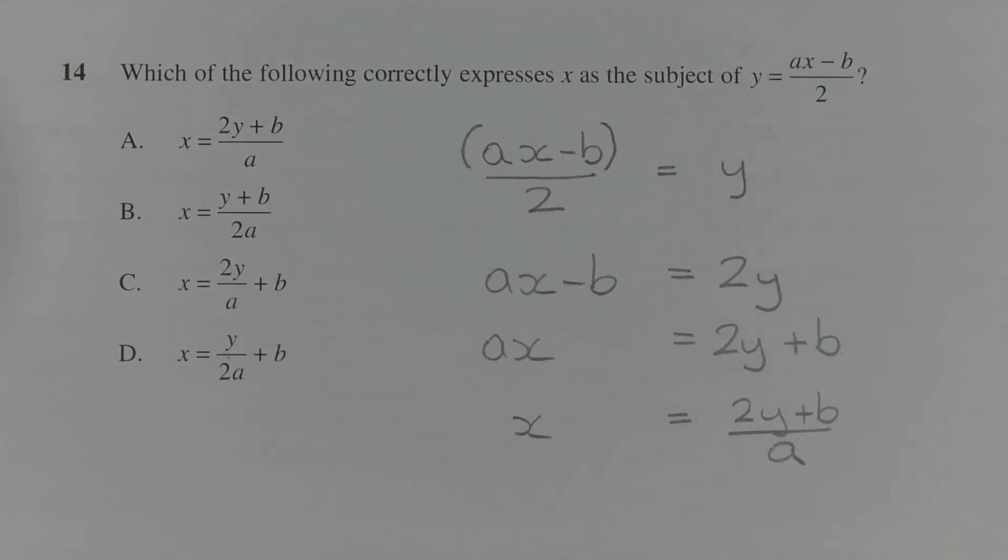Another thing to note is that we're dealing with a formula that contains a fraction where the numerator consists of two terms, that is ax minus b. In order to ensure that order of operations is followed correctly, it's good practice to place brackets around the numerator in this case. So I'm going to rewrite the formula as ax minus b in brackets all over 2 equals y.